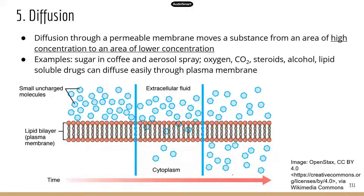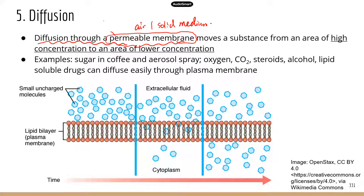Diffusion is about the movement of molecules. Molecules have a tendency to diffuse through a permeable membrane, or through air or a solid medium. When we see a permeable membrane, this is more about diffusion in liquid, because this is related to physiology in our body — a watery environment where we're looking at cells and the cell membrane, which is permeable only to some substances.